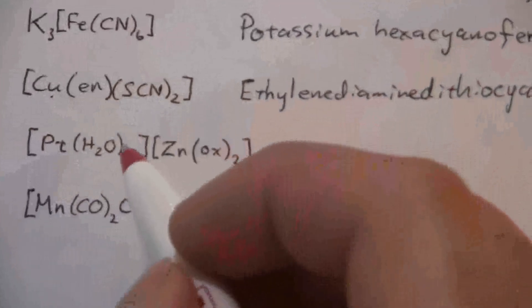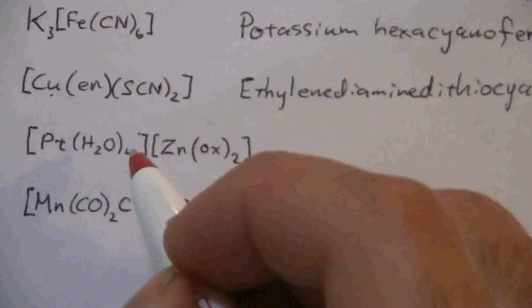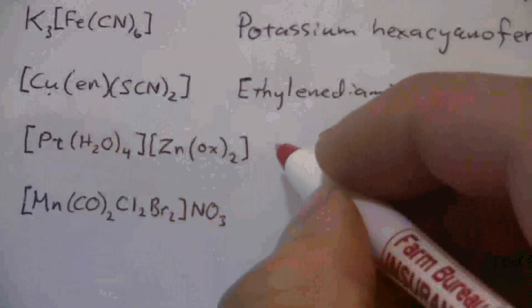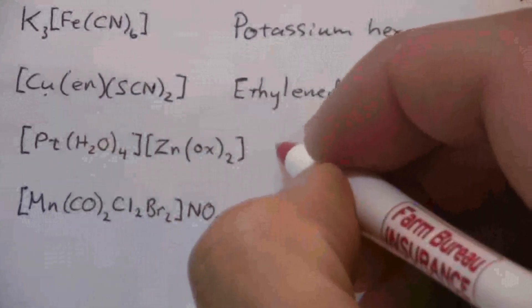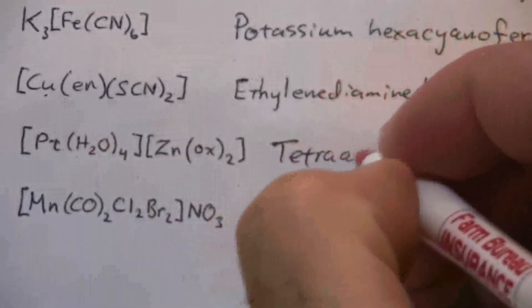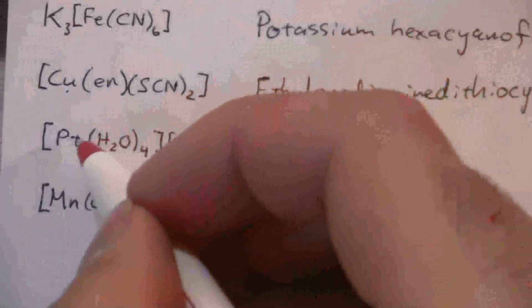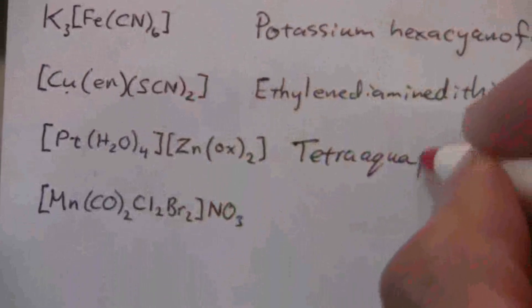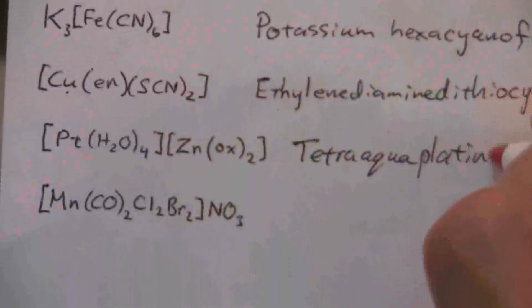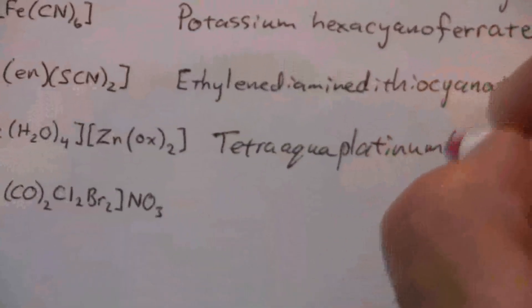Okay, so here we have, we name the ligands first, tetra and then water becomes aqua. So this is tetra aqua and then platinum and we said it's a two, positive two charge.